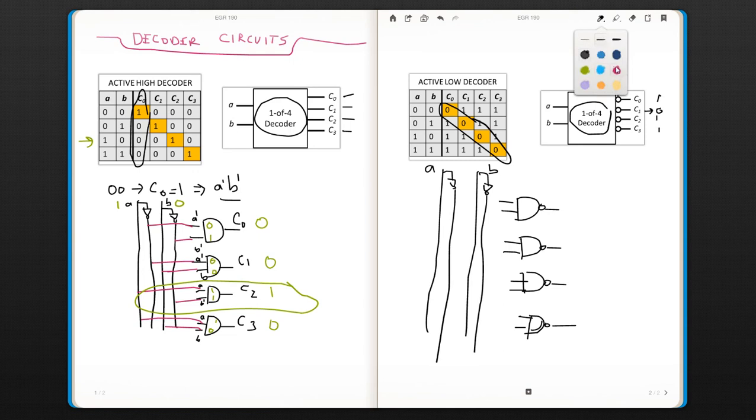So your first, okay this is A not B not, A not B not, this is A not B, this is A B not, A B not, and A B. So your outputs are 0, 1, 2, and 3.